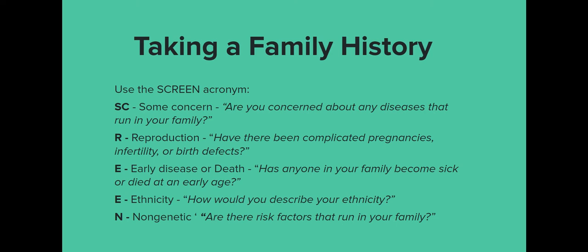To take a family history from someone who hasn't brought you a standardized form, you can use the acronym SCREEN. Start with: do you have any concern about diseases that run in your family? That opens a portal for people to discuss conditions like Alzheimer's or breast cancer running in their family. A lot of times people are terrified of those genetic diseases because it seems like an inescapable thing — you can't outrun your DNA. We know from epigenomics that environment does play a factor in some of these.